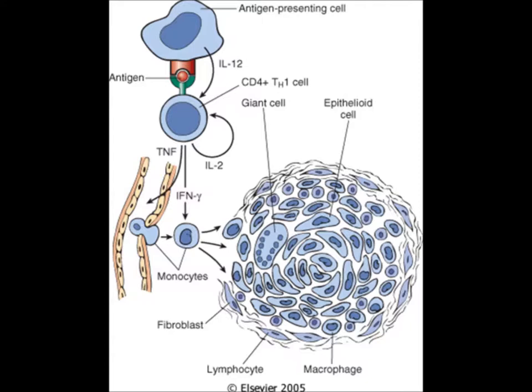The antigen presenting cells secrete interleukin-2, TNF, and interferon gamma. TNF causes chemotaxis of monocytes, and interferon gamma converts them into epithelioid cells. These are activated macrophages, and they fuse to form giant cells. This is how the granuloma is formed.